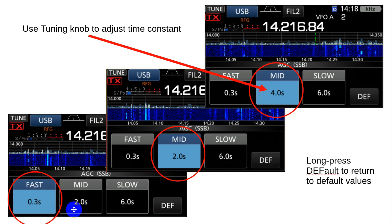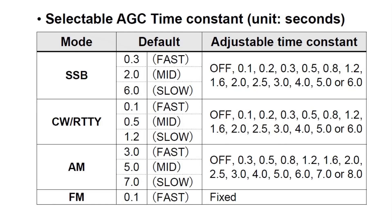Looking at the ICOM manual: for single sideband, you'd normally use mid or slow. One nice thing about slow is that a strong signal you're talking to will keep background signals out of the way. You can change it to any of these values, including off. For CW and RTTY, a lot of people use fast. I don't like fast — I usually use mid. You can try all of them, because 0.1 seconds is nearly immediate recovery. If you've got softer signals in the background, I kind of like to keep those out of the way.